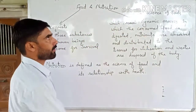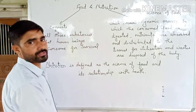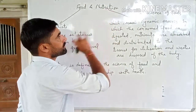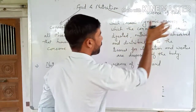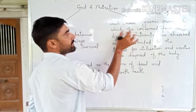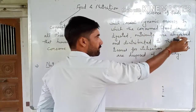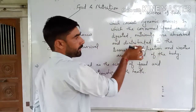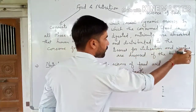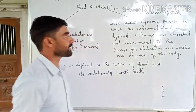What is the meaning of nutrition? Nutrition is a process — a dynamic process — in which consumed food is digested, nutrients are absorbed and distributed to the tissues for utilization, and waste products are disposed of by the body.